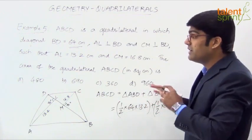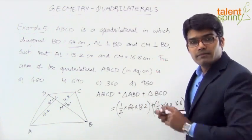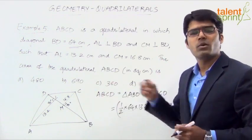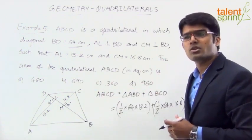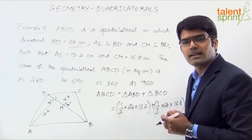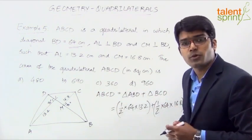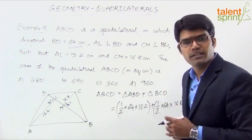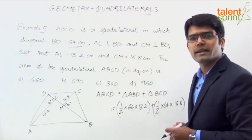Simplify this to get the required answer. So the question that actually looks to be lengthy and complicated when you just throw a glance at it is very simple. Divide the quadrilateral into two parts. One part is a triangle, the other part is also a triangle here. And using the general formula that is half into base into height for the area of triangle you can find the required answer.